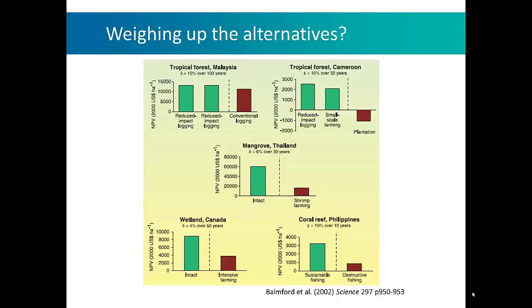The reason for this approach is based around a concept published in Science in 2002 by Bamford and colleagues. They gathered information from five studies globally to assess the net present value — the economic value — of sites under conservation versus those under some other conversion, for instance conventional logging, shrimp farming, or destructive fishing. Interestingly, in each case the economic value from conserving these sites was greater than the economic value from conversion once ecosystem services were incorporated into the assessment.